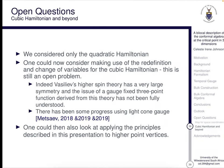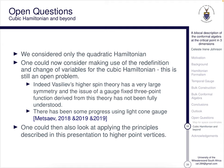And another open question: we considered only the quadratic Hamiltonian. However, one could now consider making use of the redefinition and change of variables for the cubic Hamiltonian. This is still an open problem. For example, Vasiliev's higher spin theory has a very large symmetry, and the issue of a gauge fixed three-point function derived from this theory has not yet been fully understood. There has been some progress using light cone gauge by Metsaev in 2018-2019. One could then also look at applying the principles described in this presentation to other higher point vertices.